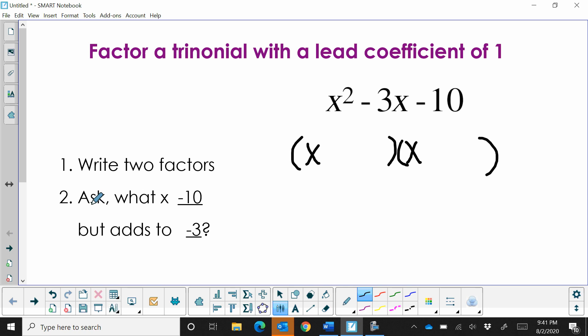Then we ask ourselves, what multiplies, this x means multiply, to negative 10. In other words, this last term of the trinomial, but it's got to add up to negative 3, the second term. So what multiplies to negative 10, but then adds to negative 3?